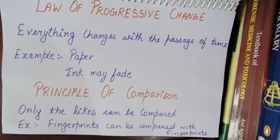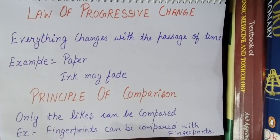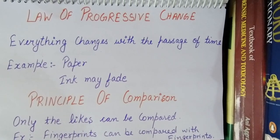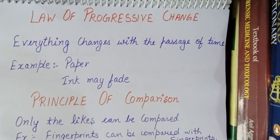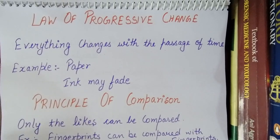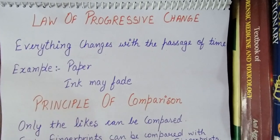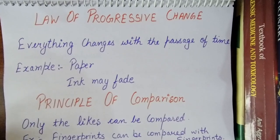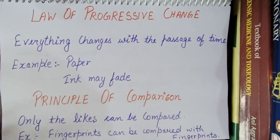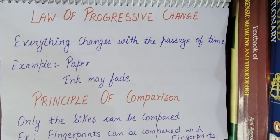Our next law is the Law of Progressive Change. It says that everything changes with the passage of time. Samples will degrade over time — like DNA, blood samples, and other biological samples. If we don't collect the samples in time, the DNA sample will degrade. Bodies will also decompose with time.